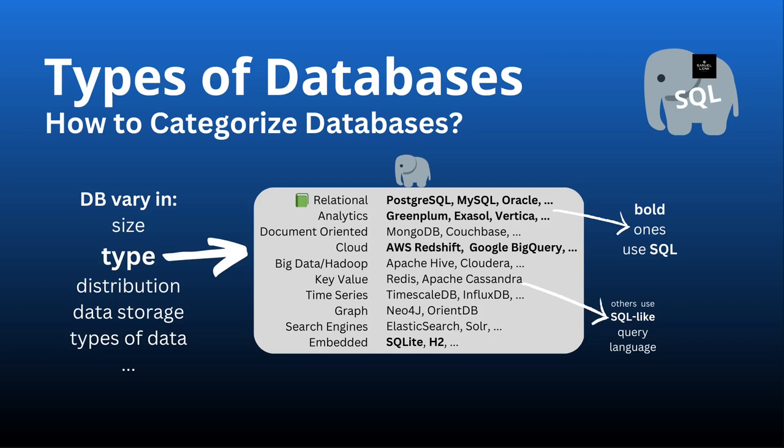For example, if we talk about distribution, we could talk about on-premise databases — so it's on your local computer or in your company internally on some server — or it could be a cloud database, or it could be a distributed database that has nodes all over the globe.